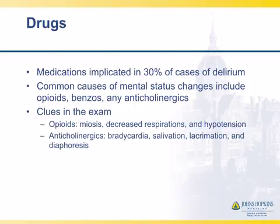Medications are the most often implicated cause of delirium, especially benzodiazepines, opiates, and anticholinergics. For opiates, you want to look for small pupils, decreased respirations, and hypotension — those are fairly significant findings. We'll often see this on the surgery service after patients have been started on a PCA. Sometimes it's called as an acute stroke call, sometimes as a delta MS, and they'll have small pupils from opiate use. For anticholinergics, look for bradycardia, salivation, lacrimation, and diaphoresis.